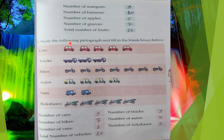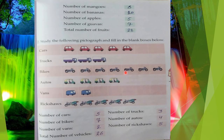Now the next question: study the following pictograph and fill in the blank boxes below. Again here there is a pictograph and you have to solve some questions. The first is cars — 1, 2, 3, 4, 5 — five cars. Trucks — 1, 2, 3 — three trucks. Bikes — 1, 2, 3, 4, 5, 6, 7 — seven bikes. So you have to maintain this in a data way.